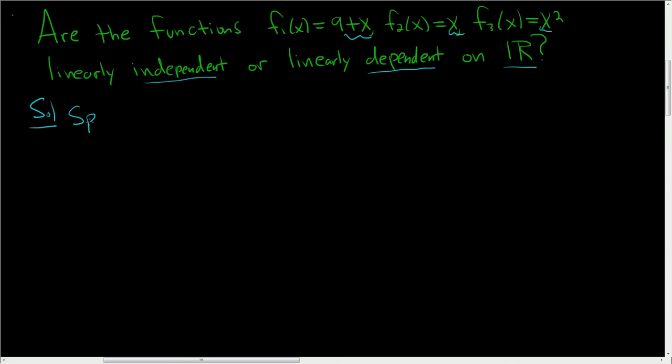We'll start by supposing we have what's called a linear combination of our three functions and that it's equal to 0. So what is a linear combination?